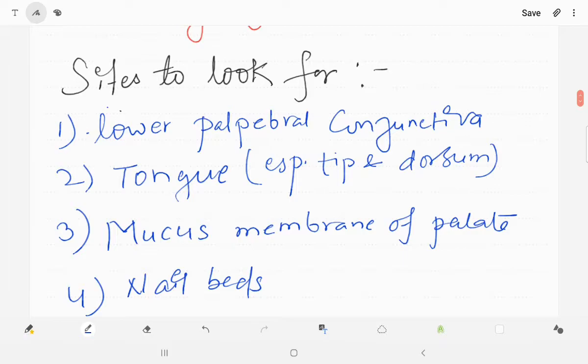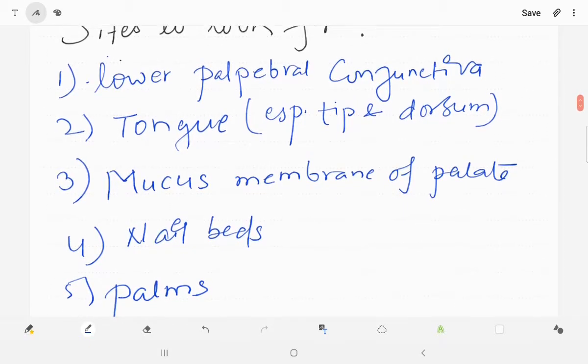What are the sites that we look to detect anemia? That is lower palpebral conjunctiva, tongue especially tip and dorsum, mucous membrane of palate, nail beds.